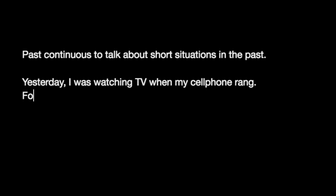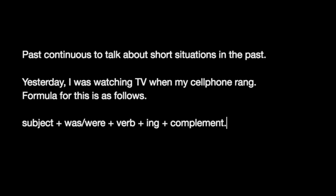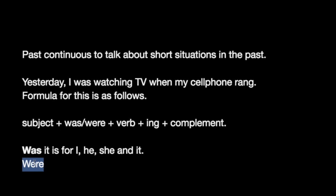The formula for past continuous is as follows: subject + was/were + verb + -ing + complement. Remember: 'was' is used with I, he, she, and it; and 'were' is used with you, we, and they.